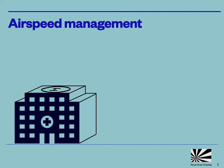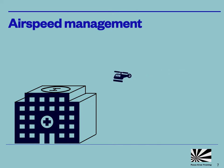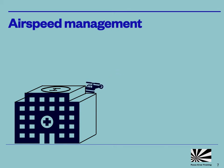Another real threat comes from allowing the airspeed to reduce below takeoff or balanced landing safety speed too early. In this situation, a loss of power from one engine may well cause a drop down, and unless there is a clear overshoot path, it's likely to result in a collision.